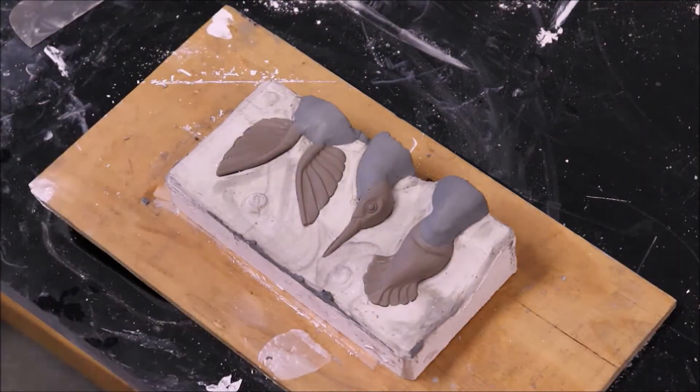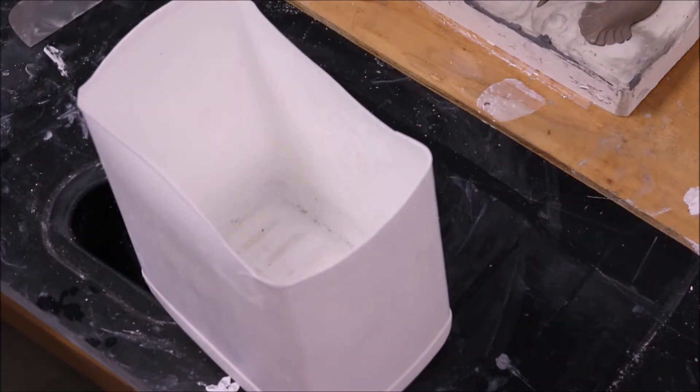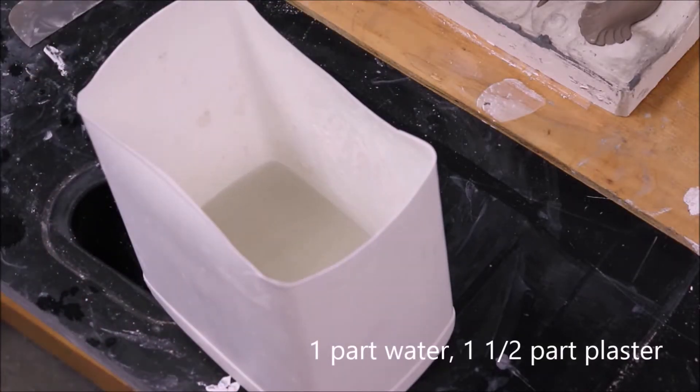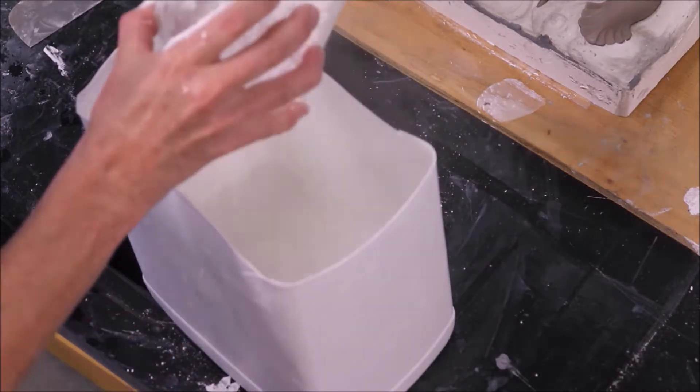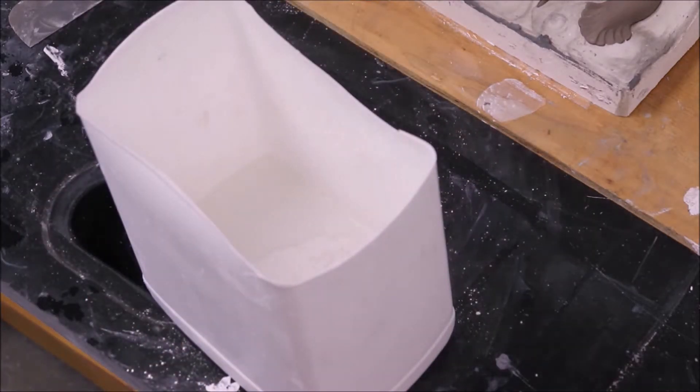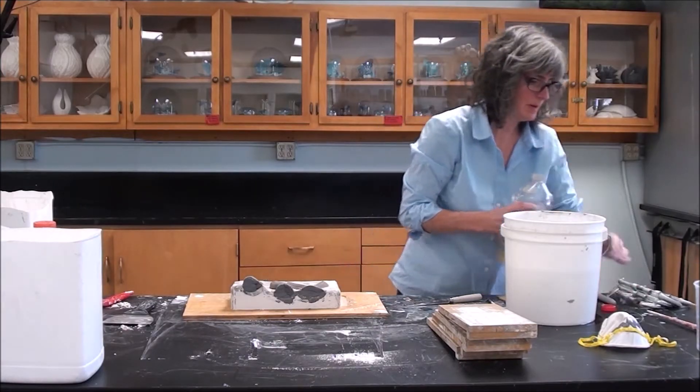For the second half, I mixed the water and plaster the exact same way as I did the first half of the mold. It is important that I use the exact same amount of plaster and water on this side of the mold to ensure that both sides of the mold are equal. While the plaster is slaking, I will finish preparing the second half of the mold.